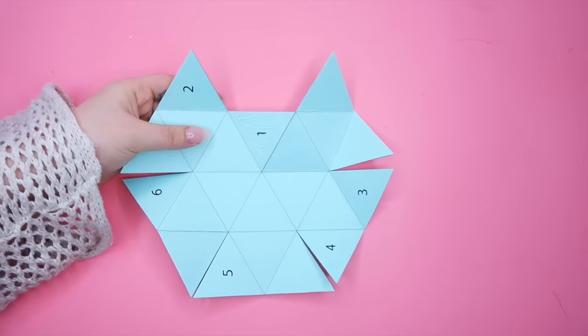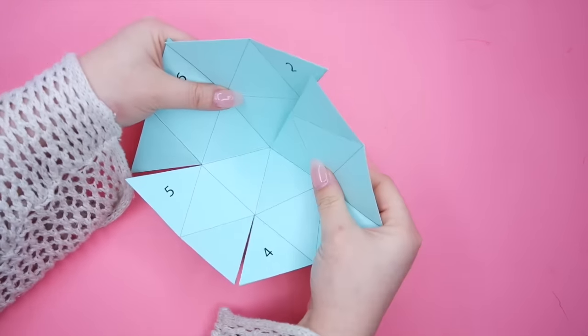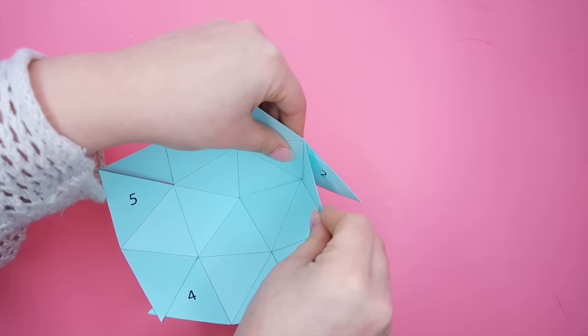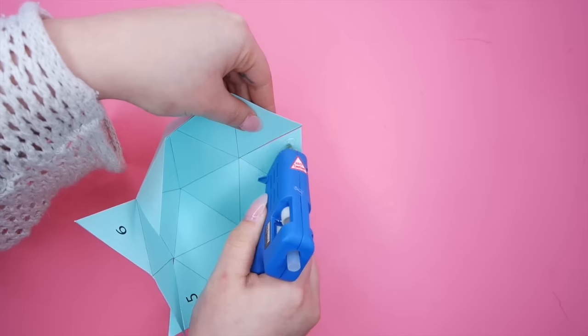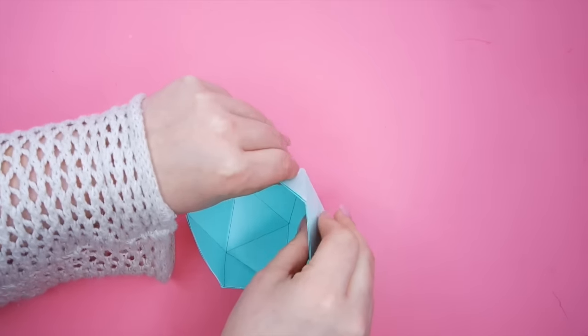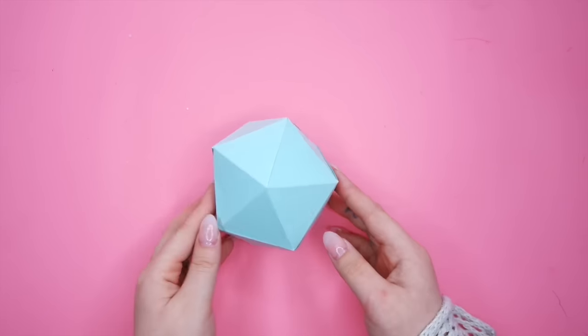Next, put some glue. We're starting on number one, go in order. Glue that to the back of the triangle beside it. Every number you're going to glue to the triangle beside it in order. This will give us the bowl-like shape we're after.